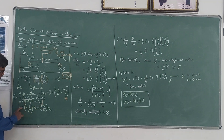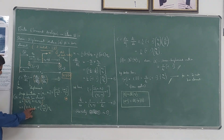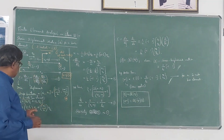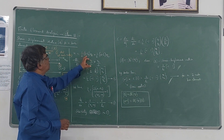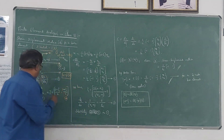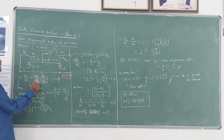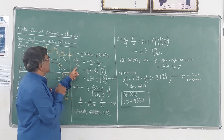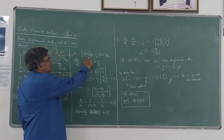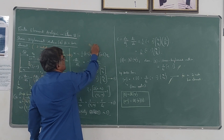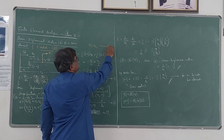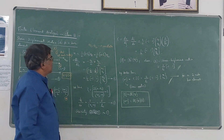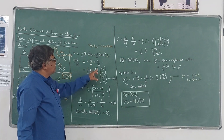Substituting for N1 and N2, u = (1 − ζ)/2 · Q1 + (1 + ζ)/2 · Q2, which simplifies to (1/2)(1 − ζ)Q1 + (1/2)(1 + ζ)Q2. Now differentiating with respect to zeta to get du/dζ — noting that Q1 and Q2 are constants (known nodal displacements) — we obtain du/dζ = −Q1/2 + Q2/2.